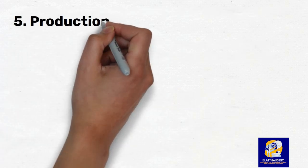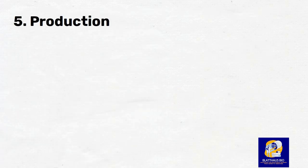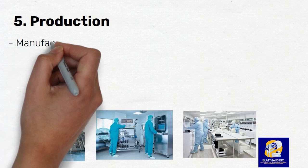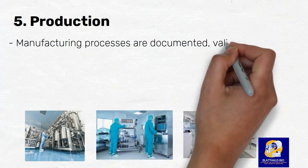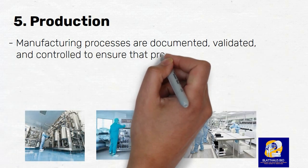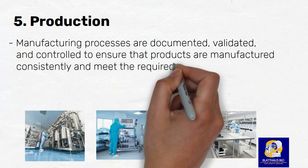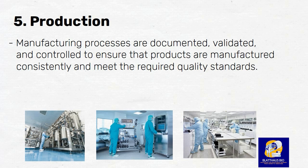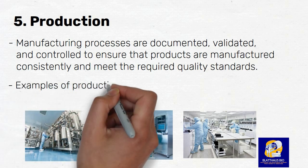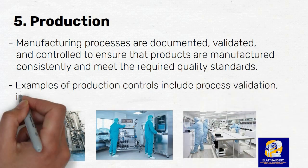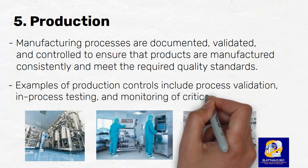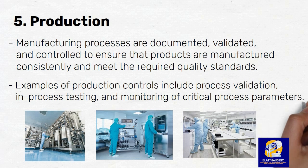Number 5: Production. The fifth principle of GMP is the control of production processes. Manufacturing processes are documented, validated, and controlled to ensure that products are manufactured consistently and meet the required quality standards. Examples of production controls include process validation, in-process testing, and monitoring of critical process parameters.